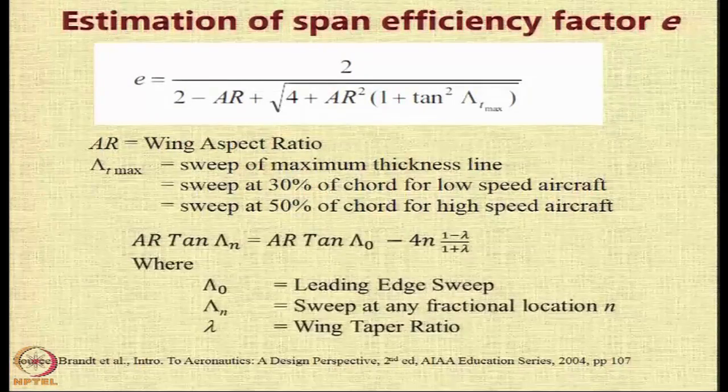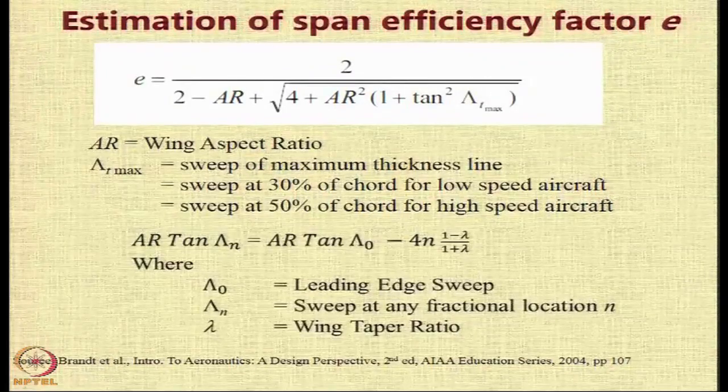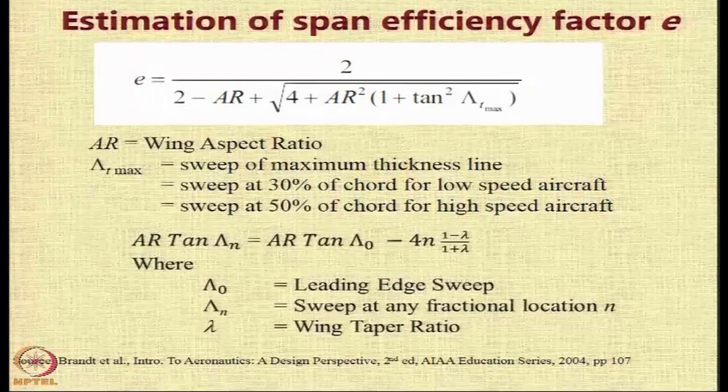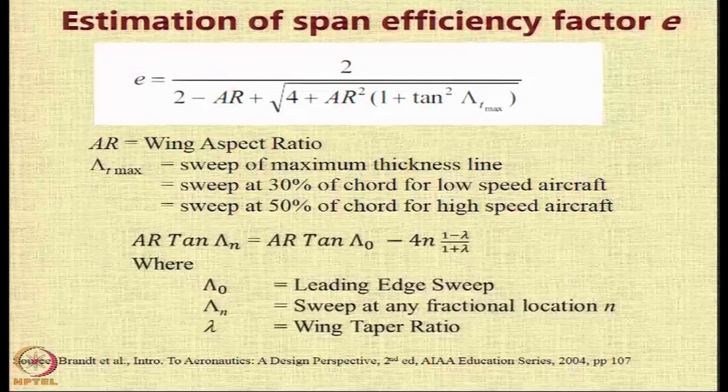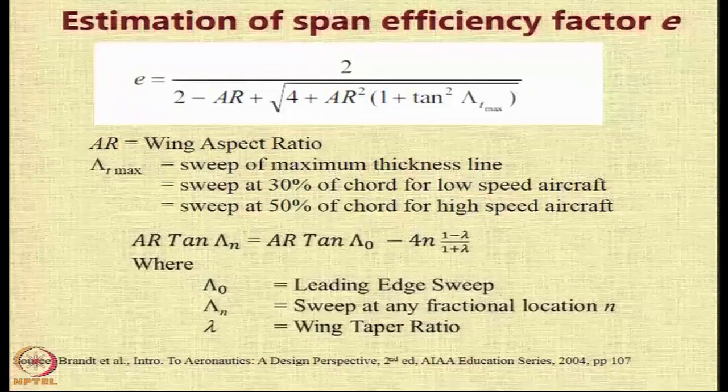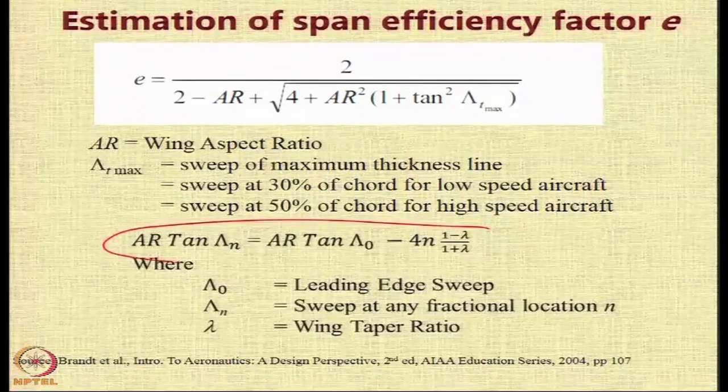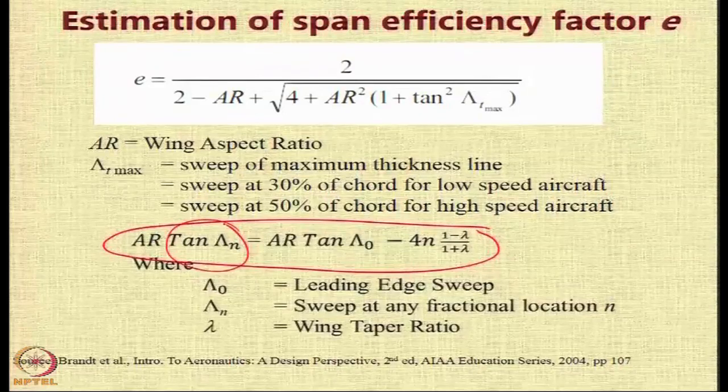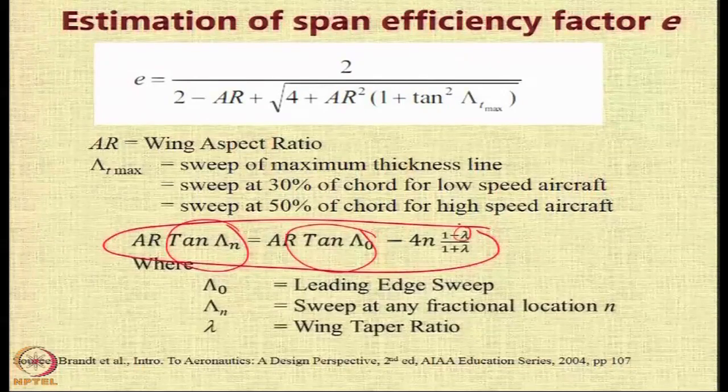Another important requirement is that you normally are given the data for the sweep at the leading edge or sweep at the trailing edge. And if you want to calculate the sweep at any location n or any fractional location n for example, 30 percent or 50 percent and you know the sweep at the leading edge that is lambda 0 and the wing taper ratio, then this particular formula can be used to estimate the value of tan lambda n which is used here as a function of tan lambda naught AR and the taper.